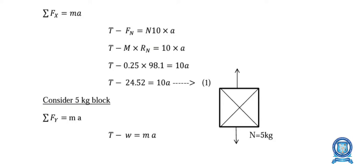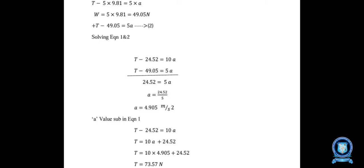For block B (hanging, no friction), the free body diagram shows tension T acting upward, weight (5 × 9.81) acting downward, and inertia effect MA acting upward since motion is downward. Resolving forces vertically: T − W − MA = 0. Substituting: T − 5 × 9.81 = 5a, giving Equation 2: T − 49.05 = 5a. Solving Equations 1 and 2, we get a = 4.905 m/s². Substituting back into Equation 1, T = 73.57 N.